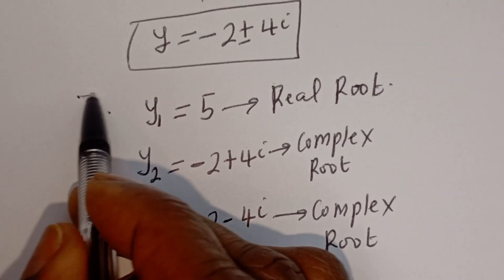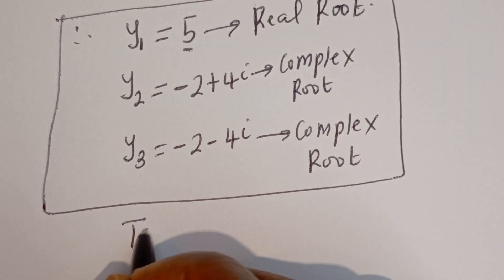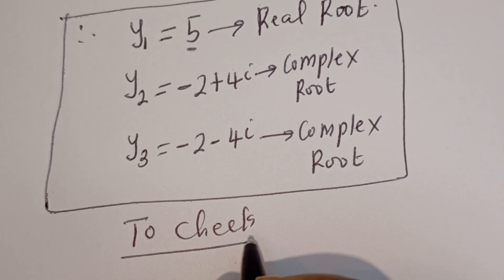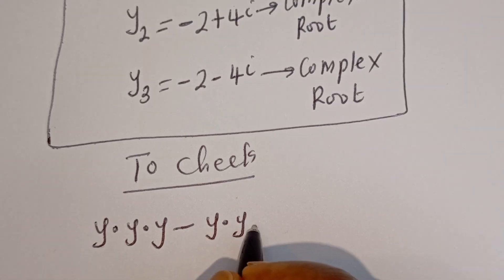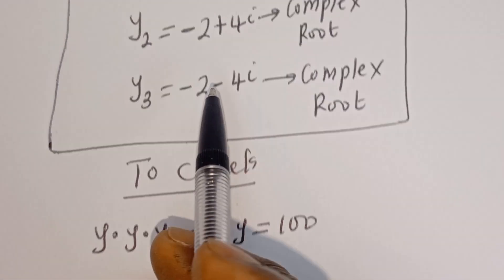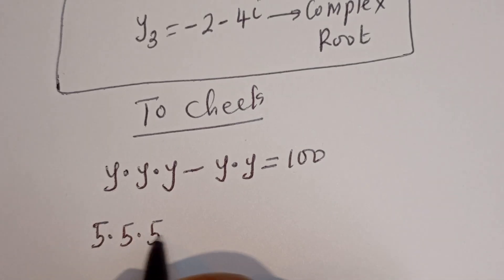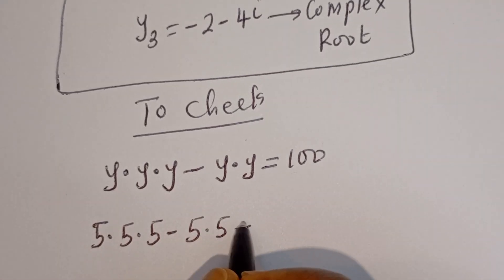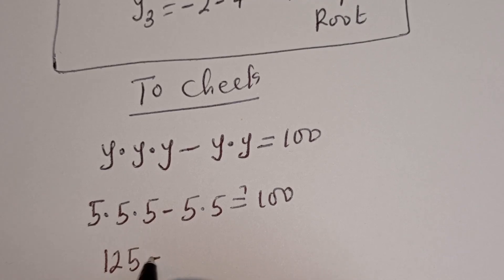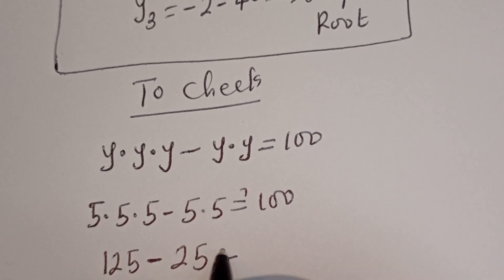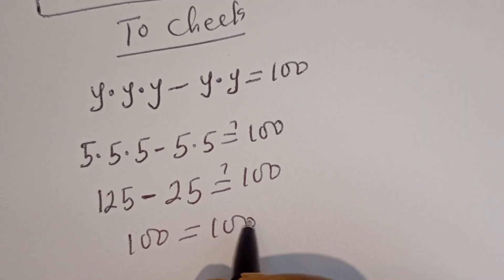We can check to confirm if this answer is right. To check, we substitute into the original equation: y multiplied by y multiplied by y, minus y multiplied by y, equals 100. When y equals 5, we have 5 times 5 times 5 minus 5 times 5, which is 125 minus 25, and that equals 100. This is true, confirming our answer.